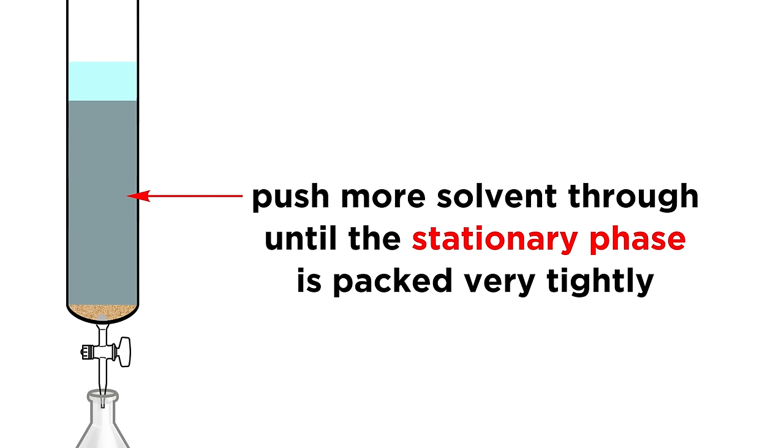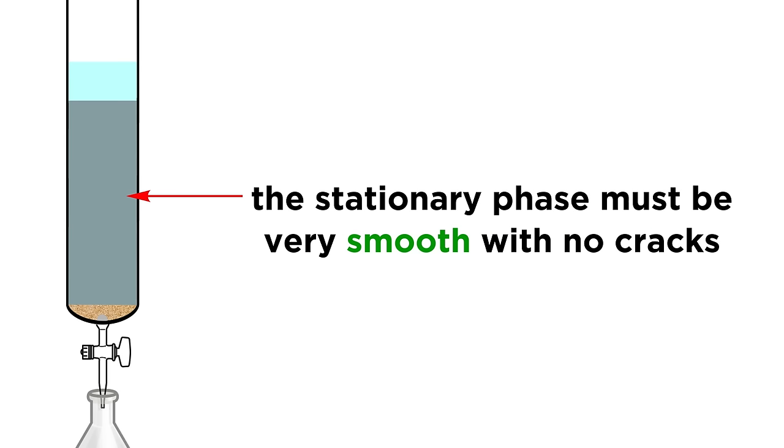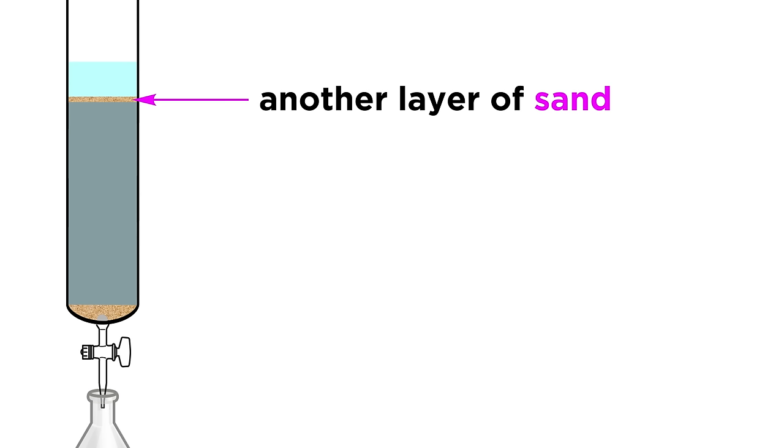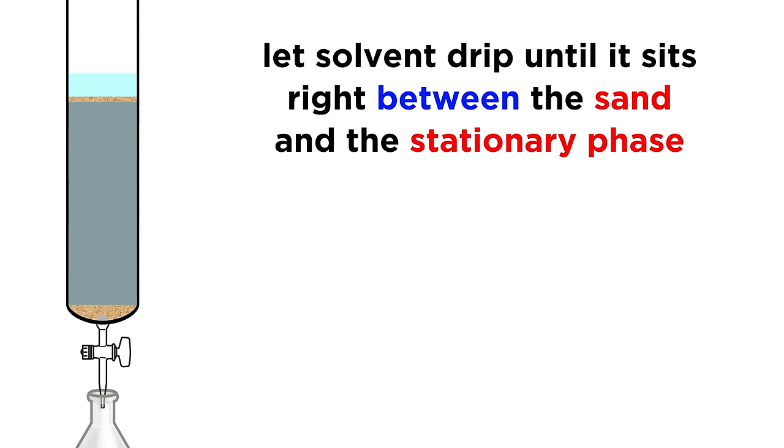While packing the column, use more solvent if you need to. We just need the stationary phase packed down tightly. It is very important that the stationary phase is completely smooth, there can be no cracks or uneven sections. Once that's all set, we place another layer of sand on top of the column, and then allow the solvent to drip until it sits just between the sand and the stationary phase, without going below.